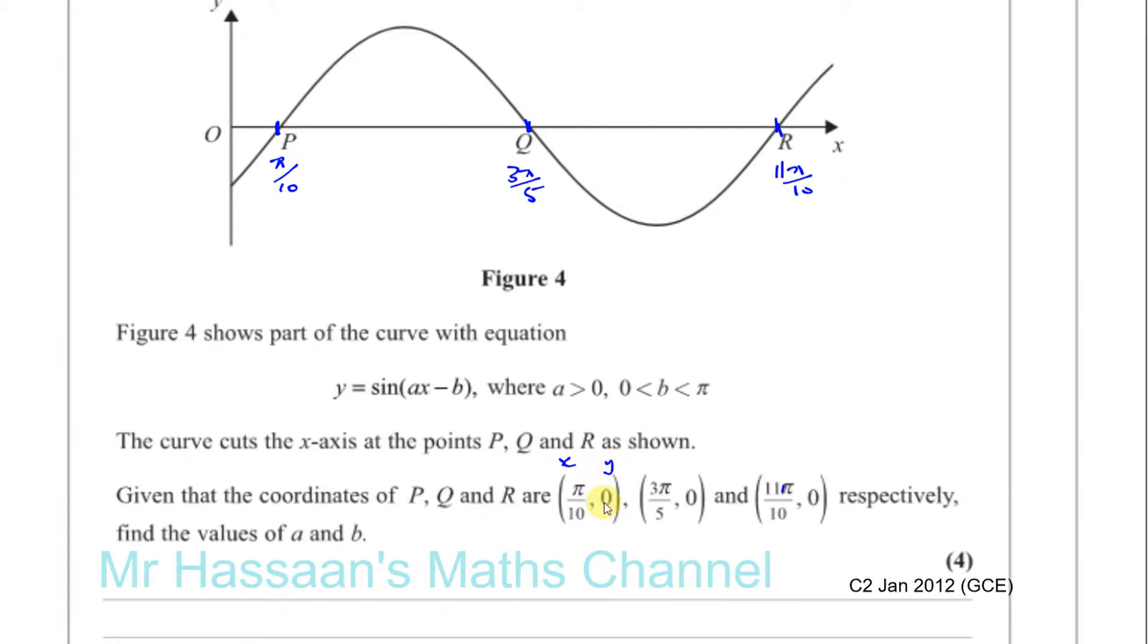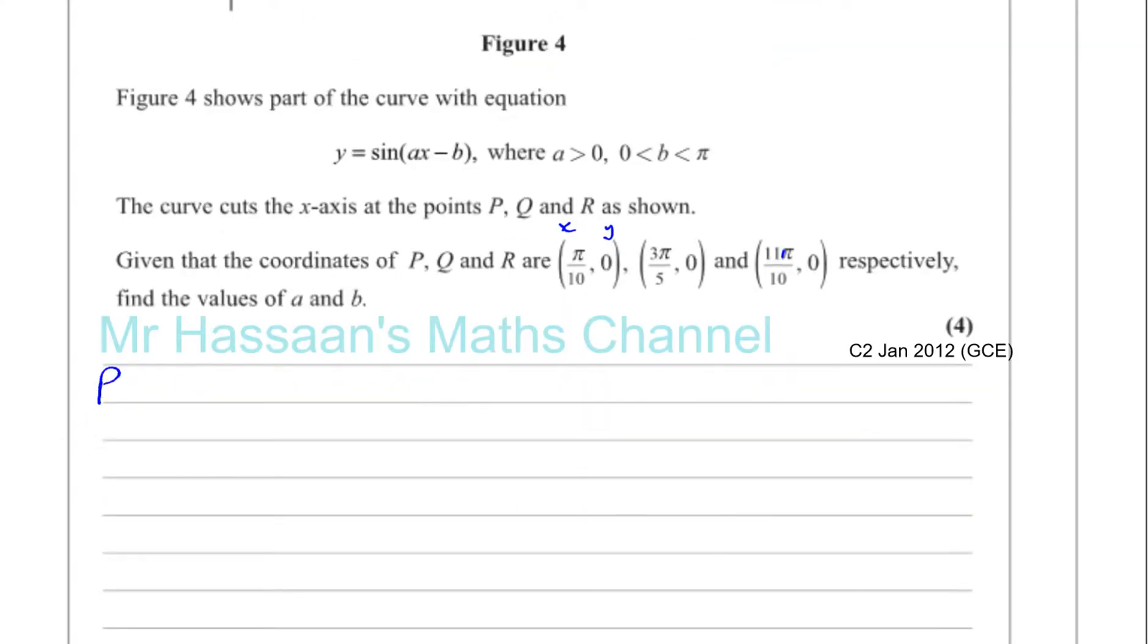It's going to give us 0 over there. So what we can say is for P, we can say sine, instead of x, with P, x is equal to pi over 10. So you're going to have sin(A times pi over 10). So that's pi A over 10 minus B equals 0.